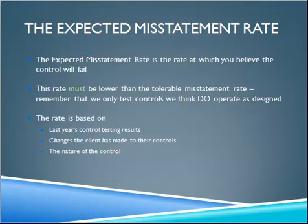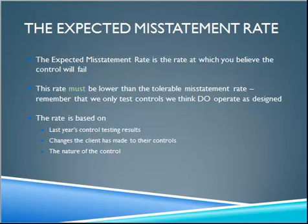The next element is the expected misstatement rate — the rate we believe the control will fail. This rate has to be lower than the tolerable misstatement rate, or we won't test the control. If I can tolerate only 4% mistakes but I expect 10% mistakes, then the control does not help me — I think it does not operate as designed. The expected misstatement rate is based on last year's testing, changes the client might have made to improve or worsen the controls, and the nature of the control.